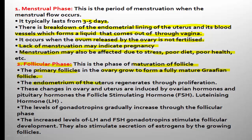The endometrium is regenerated because during the menstrual phase it was shed. These changes in the ovary — primary follicle growth into the mature graafian follicle — and endometrial regeneration inside the uterus occur simultaneously. That is why during the menstrual cycle, changes occur both inside the ovary and inside the uterus.